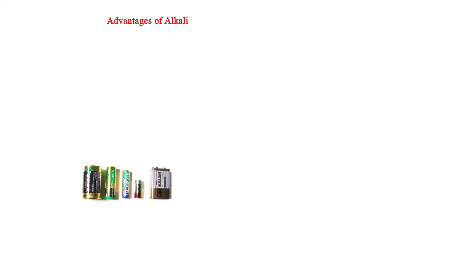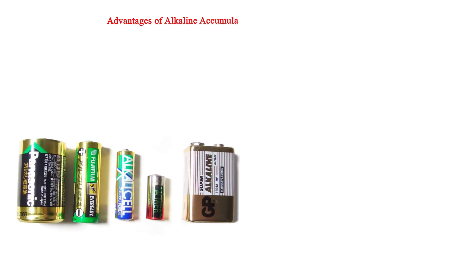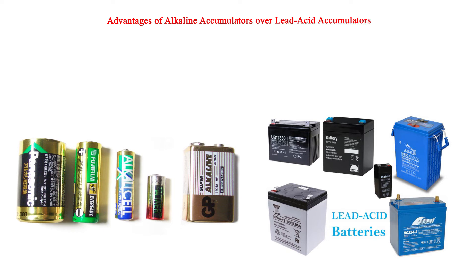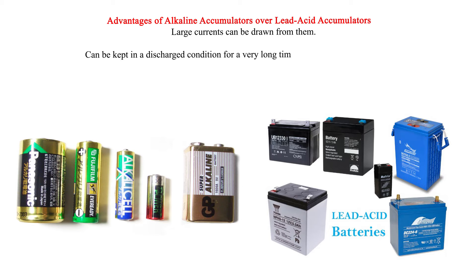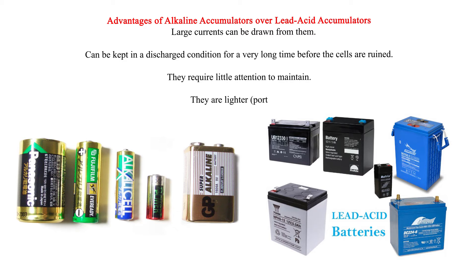Advantages of alkaline accumulators over lead acid accumulators: Large currents can be drawn from them. They can be kept in a discharged condition for a very long time before the cells are ruined. They require little attention to maintain. They are lighter and portable.